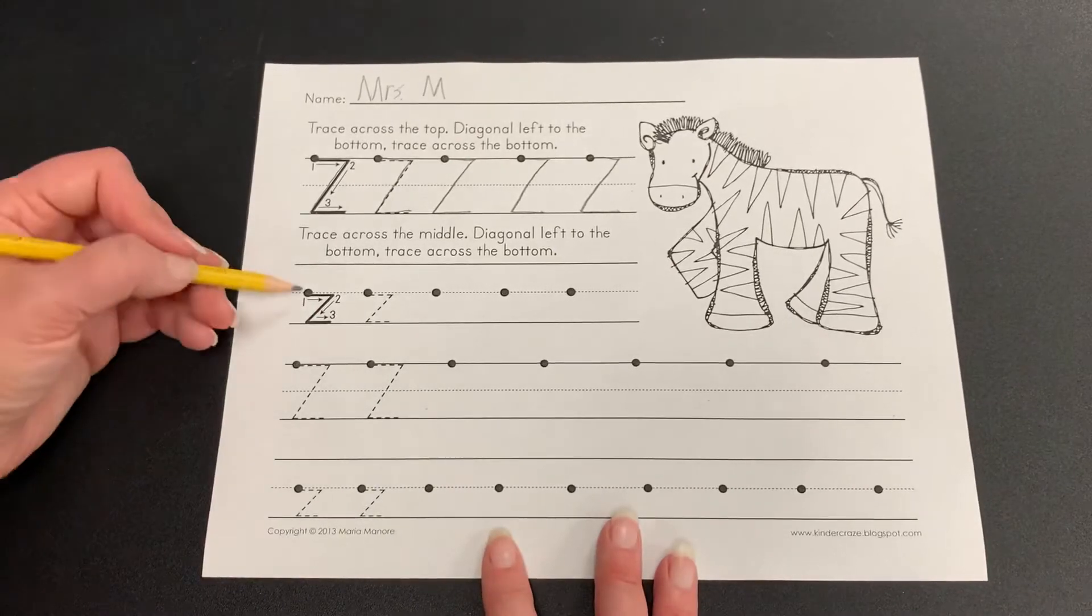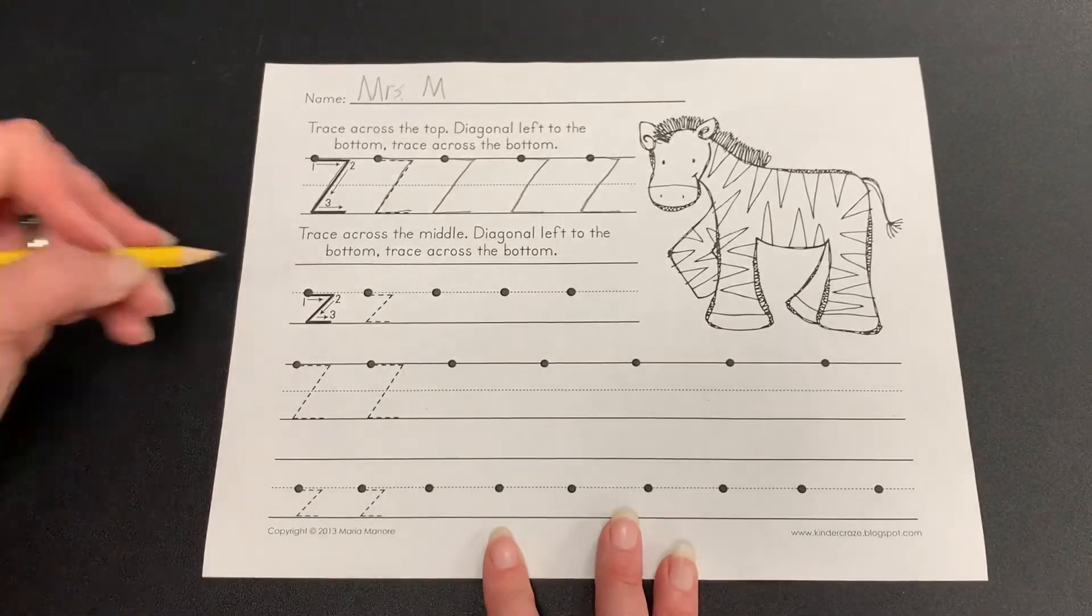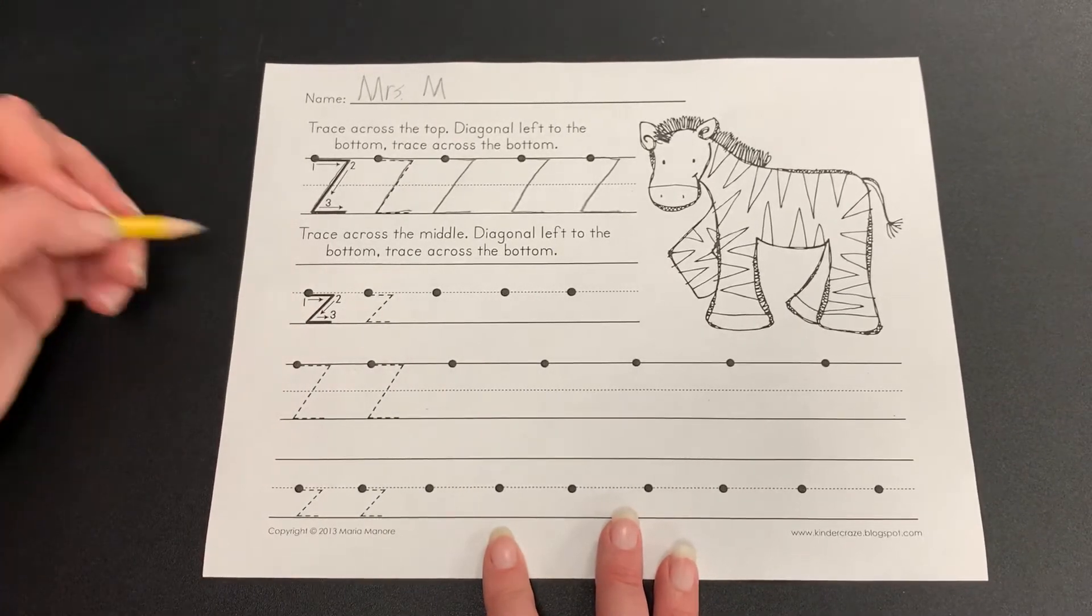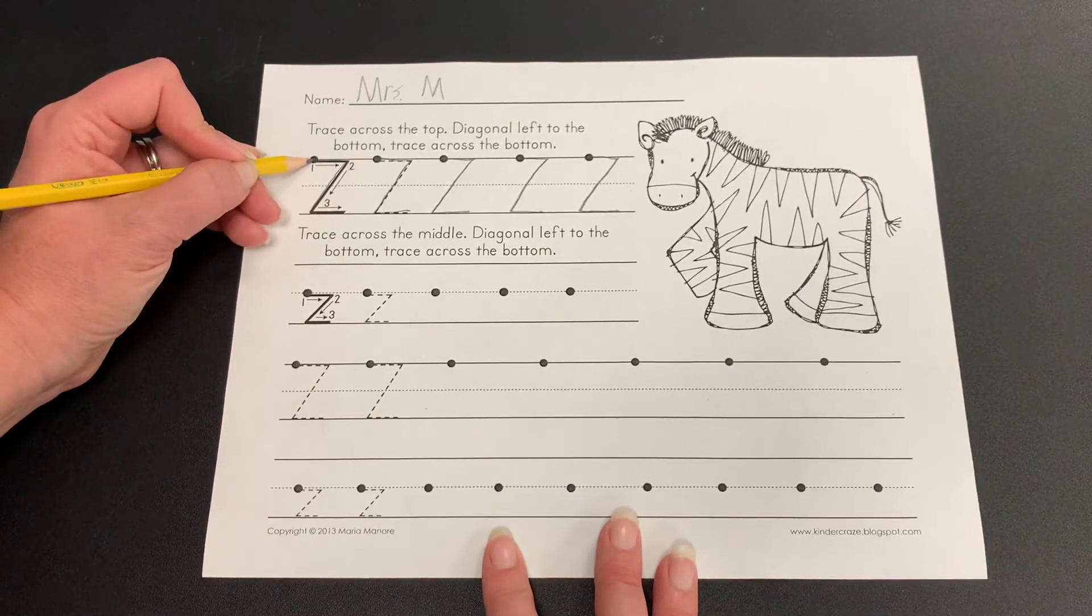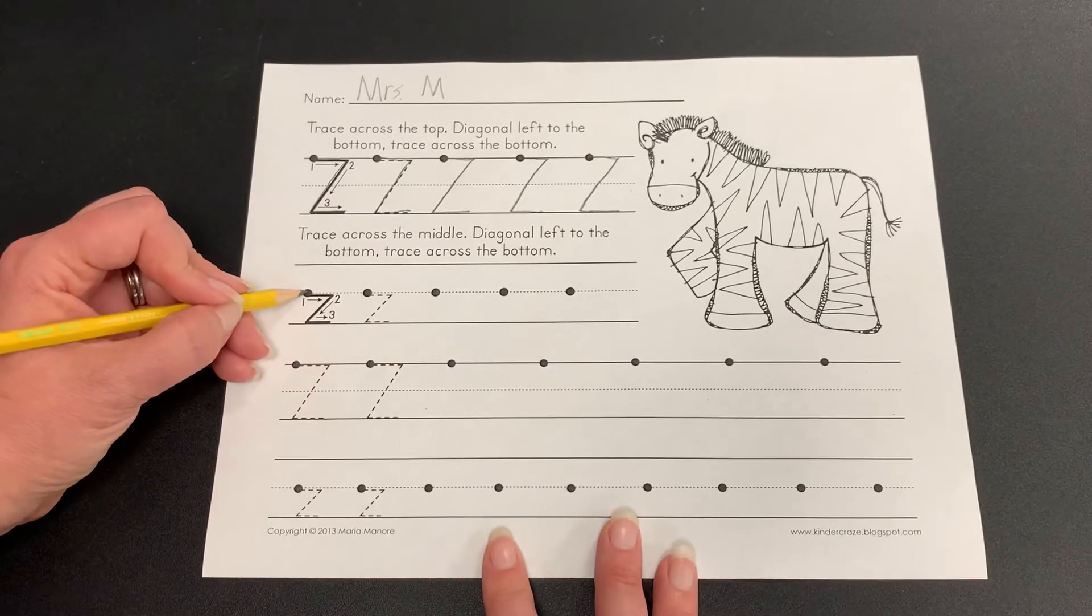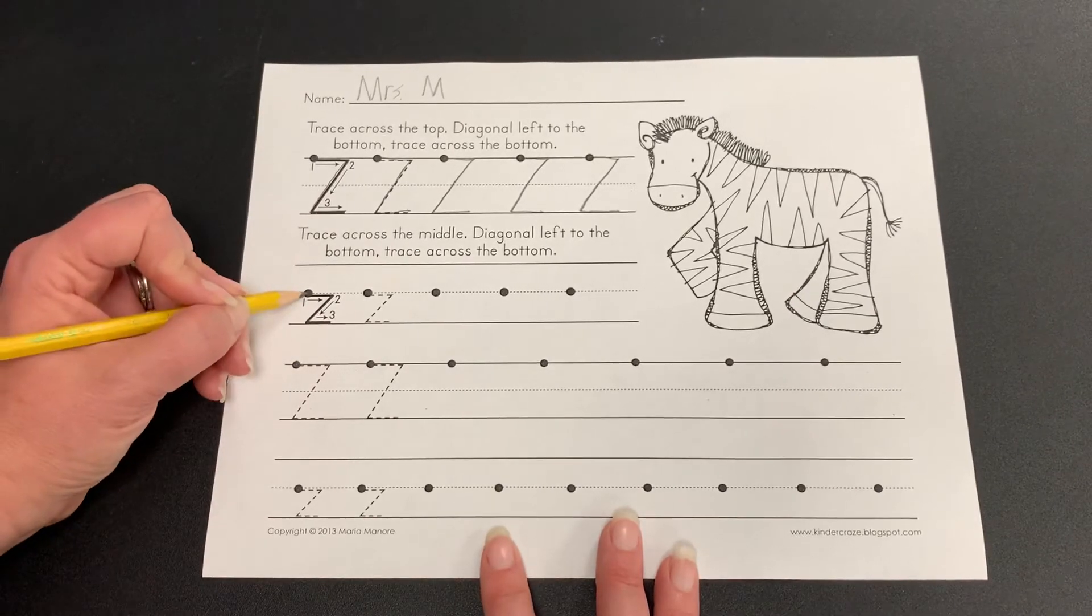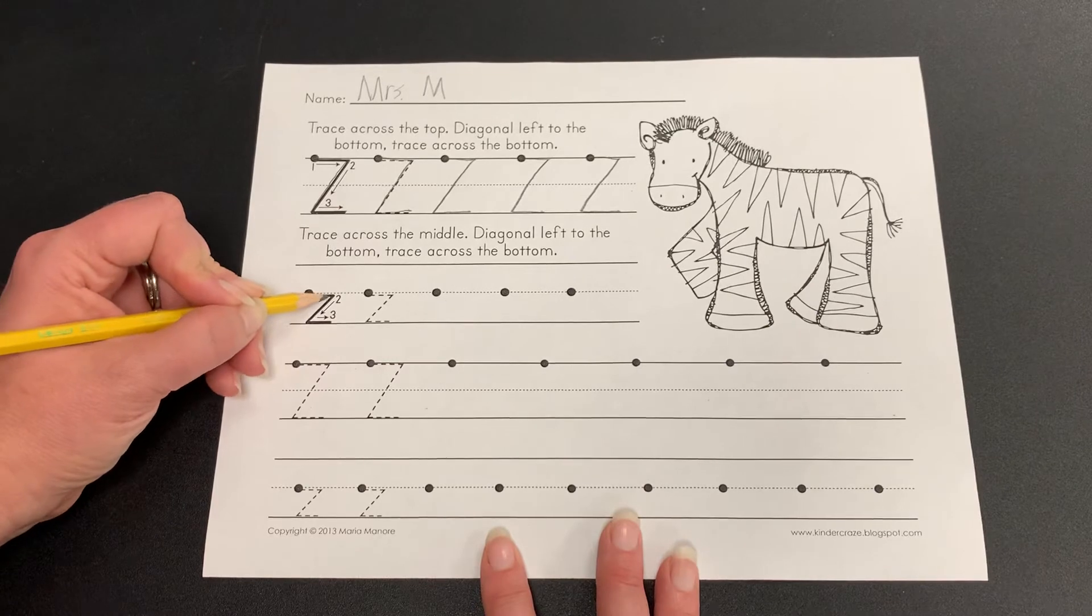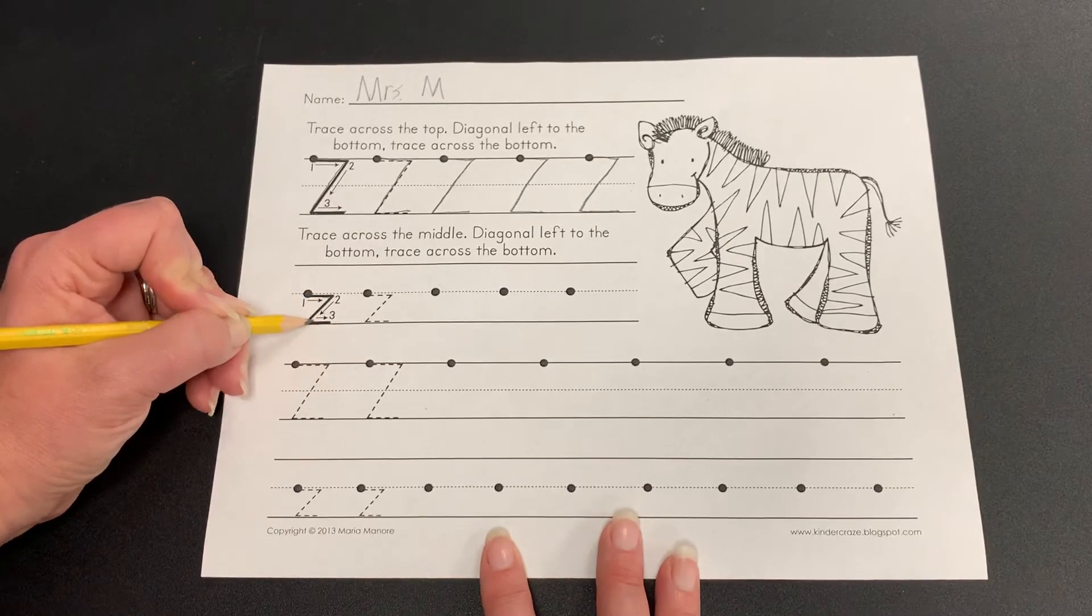Let's try making a lowercase letter Z. Now for this letter Z, it's not going to be as big and tall as the capital letter Z. It's going to be short and it lives on this middle dotted line. So same letter Z, I'm gonna go straight, slanted, straight.